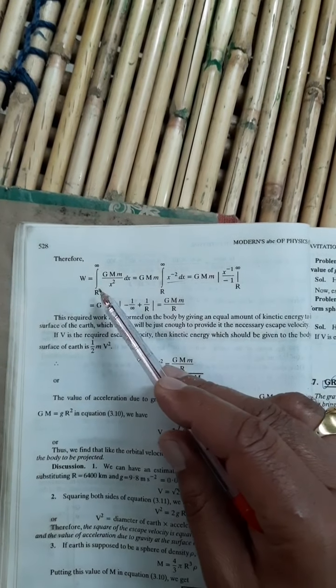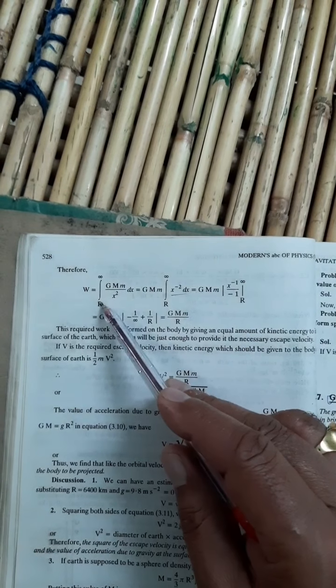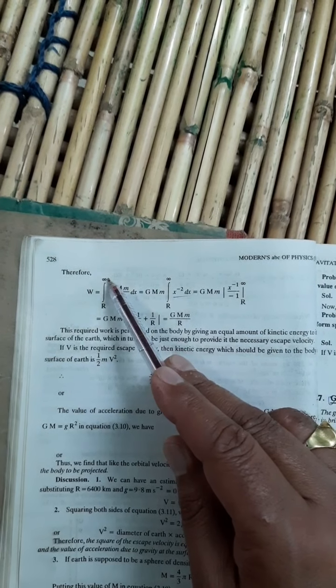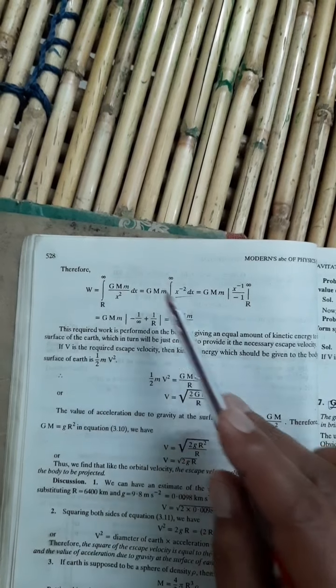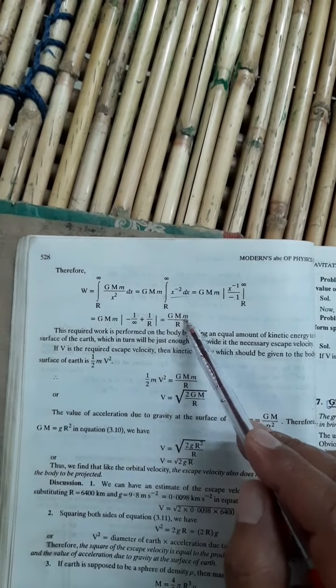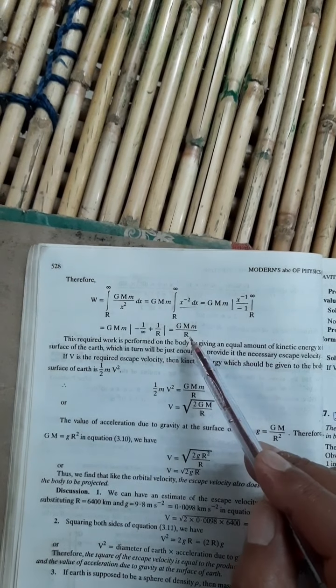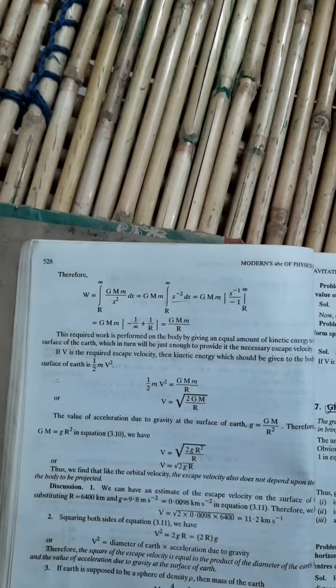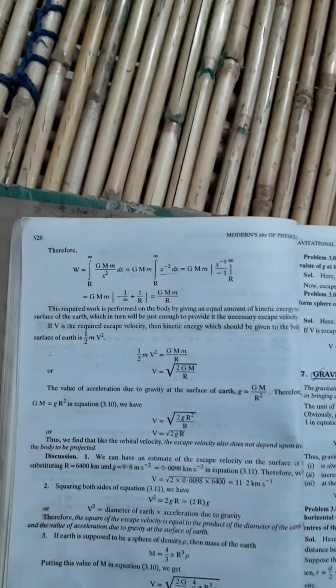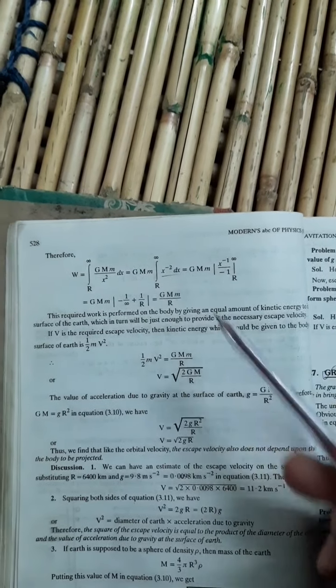Suppose you are releasing an object from R to infinity. R means from the surface of Earth to infinity you are sending. So I will integrate it within that limit. So on integrating this, it will become GMm upon R. So this will be the amount of energy required or kinetic energy required to eliminate the object from the surface of Earth from R to infinity.